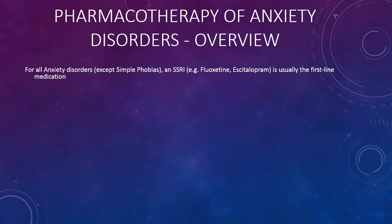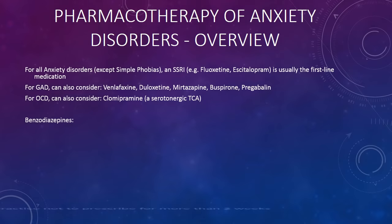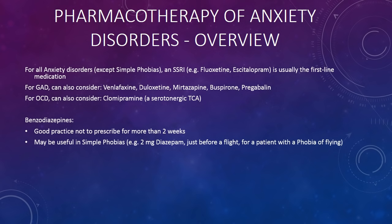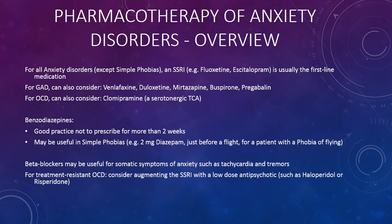For all anxiety disorders except simple phobias, an SSRI such as fluoxetine or citalopram is usually the first-line medication. For generalized anxiety disorder, one can also consider venlafaxine, duloxetine, mirtazapine, buspirone, or pregabalin. For OCD, clomipramine — a serotonergic tricyclic antidepressant — can also be considered. When benzodiazepines are used, it is good practice not to prescribe for more than two weeks. They may be useful in simple phobias — for example, taking a small dose of diazepam before a flight for a patient with flying phobia. Beta blockers may be useful for somatic symptoms such as tachycardia and tremors. For treatment-resistant OCD, consider augmenting the SSRI with a low-dose antipsychotic such as haloperidol or risperidone.